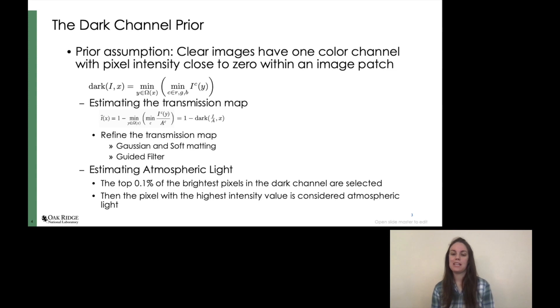Atmospheric light is estimated by taking the top 0.1% of the brightest pixels in the dark channel and choosing the pixel with the highest intensity in the regular image to be atmospheric light. These are then used in the haze equation from the previous slide. What we would like to do is to apply differentiable programming to this method in order to improve the result. We use Zygote, a Julia package for automatic differentiation to do this.